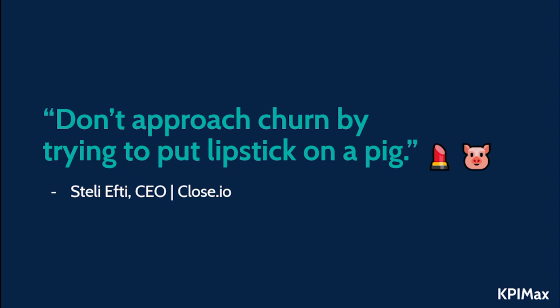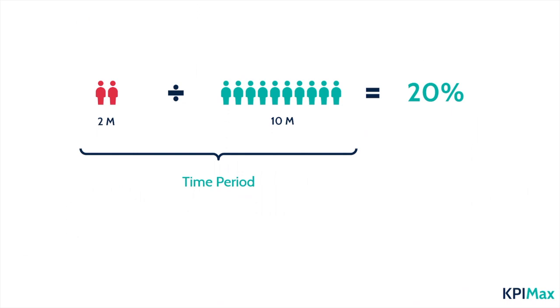With a high churn you can't focus on growing the value of your existing customers, which is where the real money lies. This is also the reason why it doesn't help to bias these numbers. As Steli Efti, the founder of Close.io, says: don't approach churn by trying to put lipstick on a pig. A lot of people calculate churn in a way that makes their company look better than it actually is, but no one will be able to trick you after this chapter.